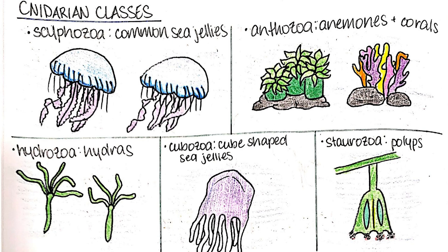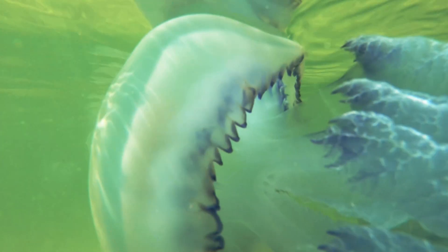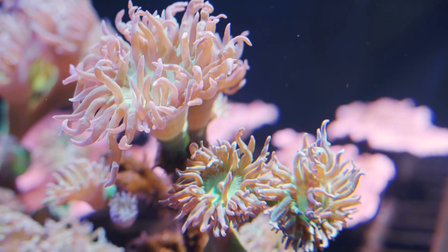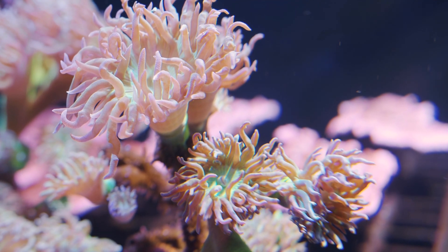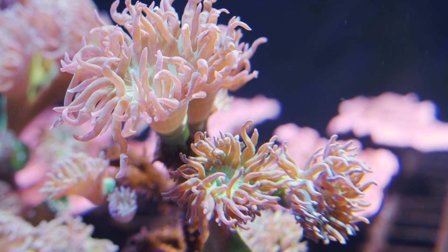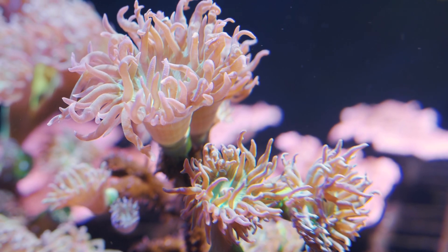And then we have the class anthozoa — the sea anemones and corals that have a permanent polyp shape and never have a medusa shape. For my marine biology class, we're only going to focus on the class cyphozoa and anthozoa. Cyphozoa is the common sea jellies and anthozoa is the sea anemones and the coral.